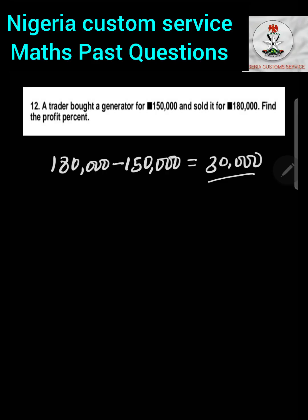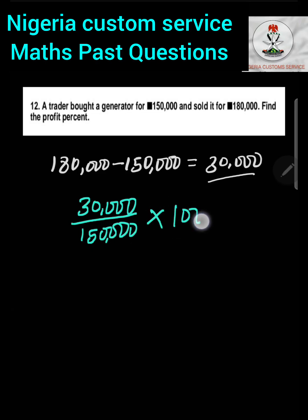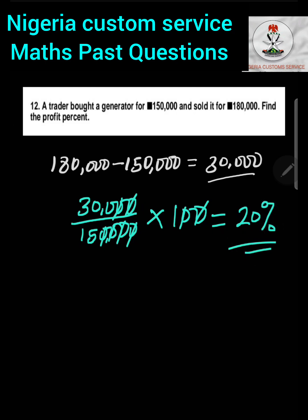The profit is thirty thousand naira. To find the profit percent, we divide the profit by the cost price then multiply by one hundred. So: thirty thousand divided by one hundred and fifty thousand, multiplied by one hundred. After cancelling zeros, we get three hundred divided by fifteen, which equals twenty percent.